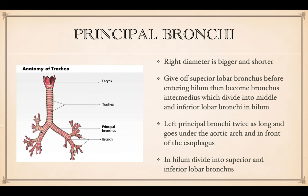On the right, the principal bronchus is larger and shorter. This one gives off the superior lobar bronchus before entering the hilum, and then it becomes the bronchus intermedius, which divides further into the middle and inferior lobar bronchi. The left bronchus is twice as long. It goes under the aortic arch and in front of the esophagus, and then those in the hilum also divide into the superior and inferior bronchi.